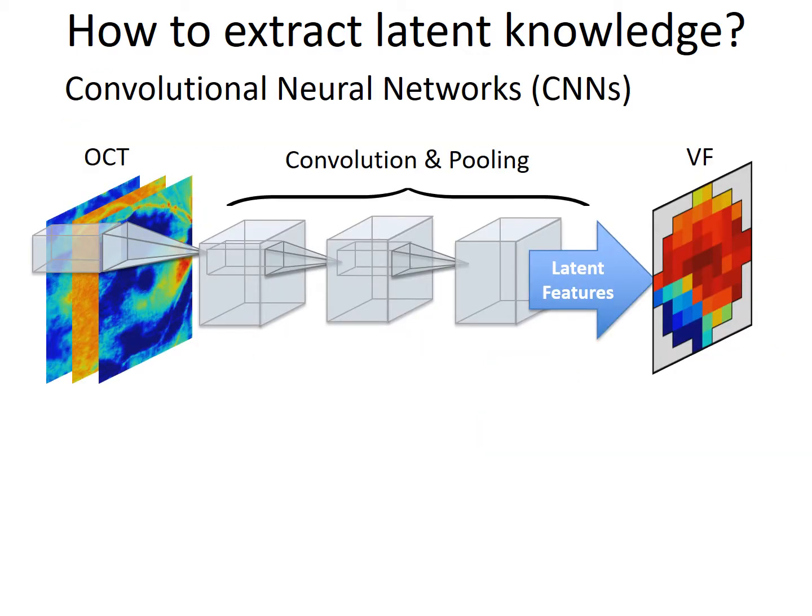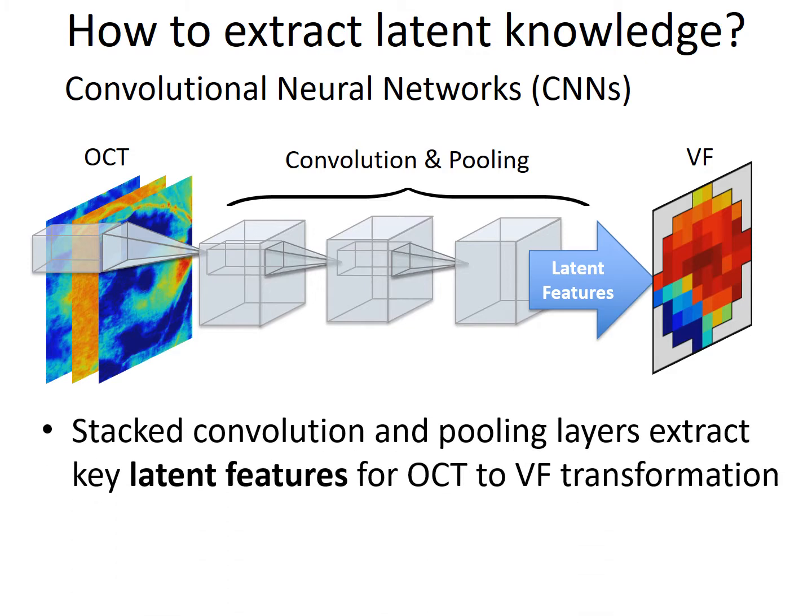The second technique is Convolutional Neural Network, or CNN, in which stacked hidden convolution and pooling layers are used to extract key latent features for OCT to visual field transformation.